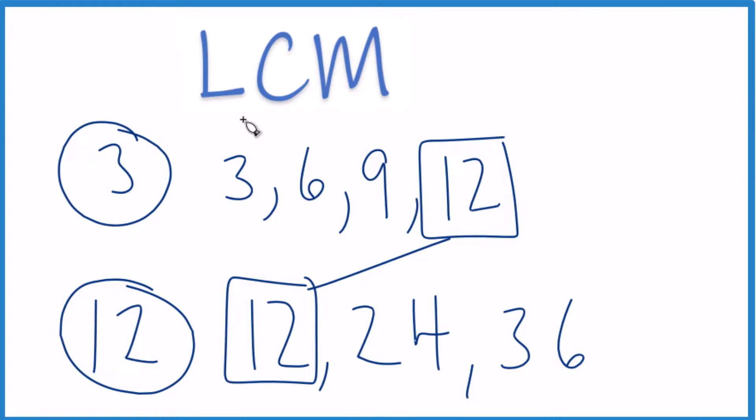You could have said 1 times 3 is 3. 2 times 3 is 6. 3 times 3 is 9. And so on. That would give you the multiples as well. But either way, the least common multiple for 3 and 12 is 12.